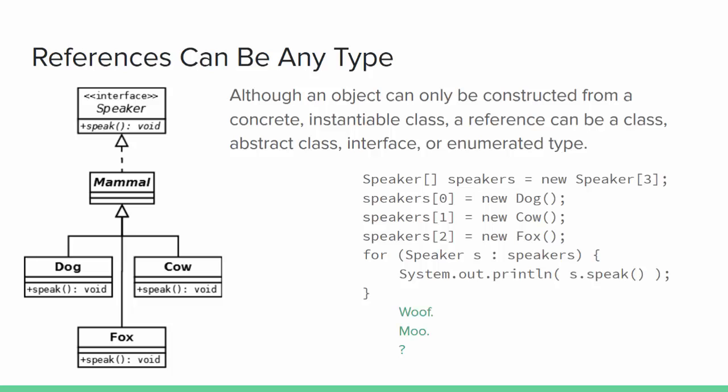Although an object can only be constructed from a concrete class, a reference can be a class, abstract class, interface, enumerated type — anything. For example, if we have an interface Speaker with one method speak(), we can create objects from classes that implement Speaker and assign them to Speaker references. Just as with class inheritance, any object that implements Speaker is a Speaker. If Mammal implements Speaker, then all child classes of Mammal also implement Speaker and must have a speak method. So we can create a Speaker array, assign our Mammal descendants to those references, and have a polymorphic collection that all know how to speak — the dog goes woof and the cow goes moo.